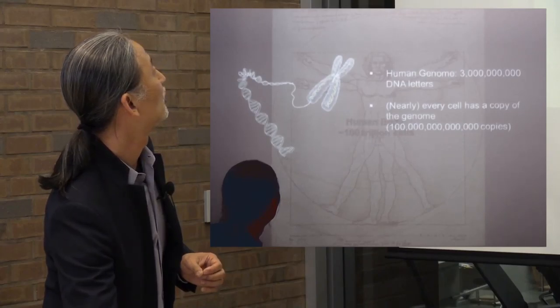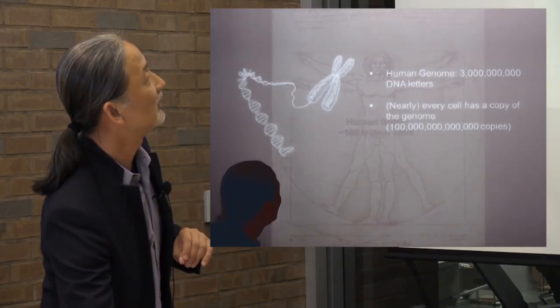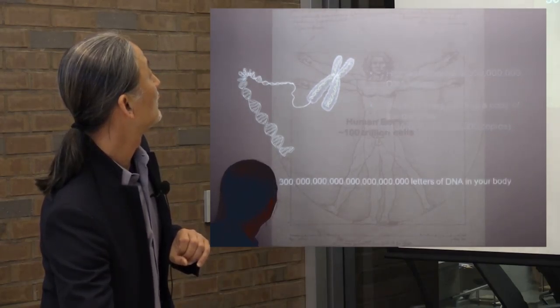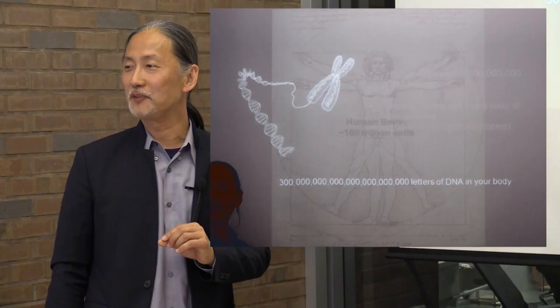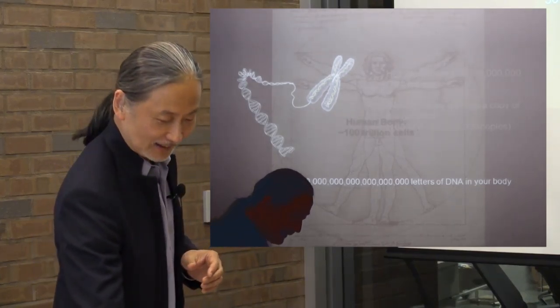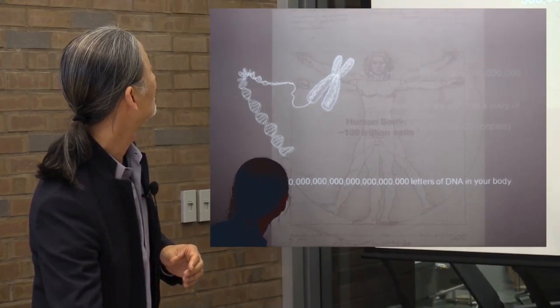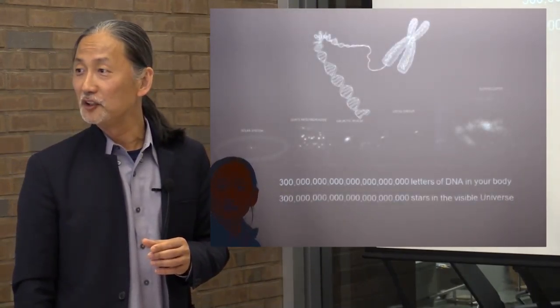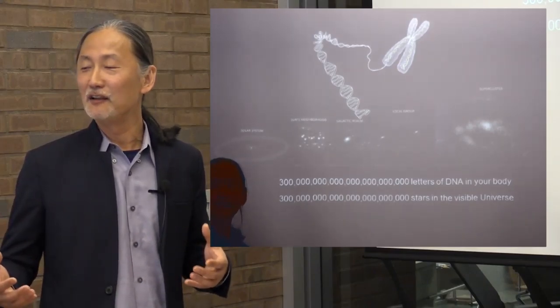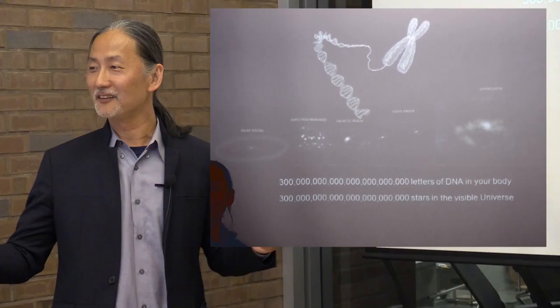The human body has about 100 trillion cells, and there are 3 billion DNA letters, with nearly every cell carrying a copy of the genome. So there are about 370 million letters of DNA in your body total — and according to astronomers, this is the same number of stars that are in the visible universe. You could say there's as much information in our bodies as there is in the universe of stars. How these letters work in individual cells tells us how the organism is built and why each cell is different.